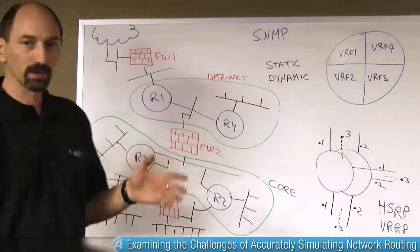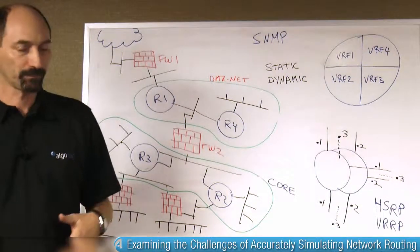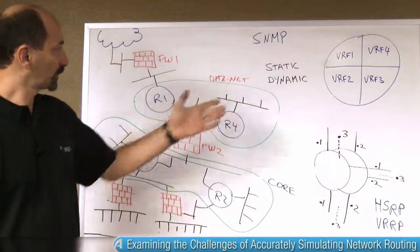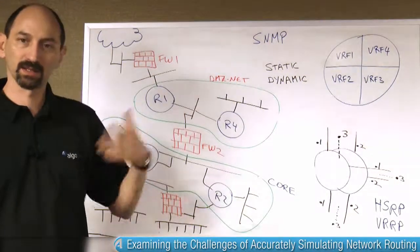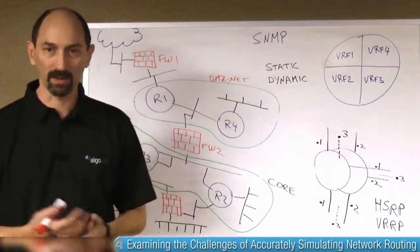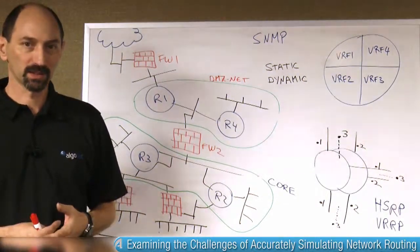And you want to be able to simulate the path that a packet would take when it's starting from one of these sides until it gets to its destination. Which path would it take? How would you go about simulating this path?